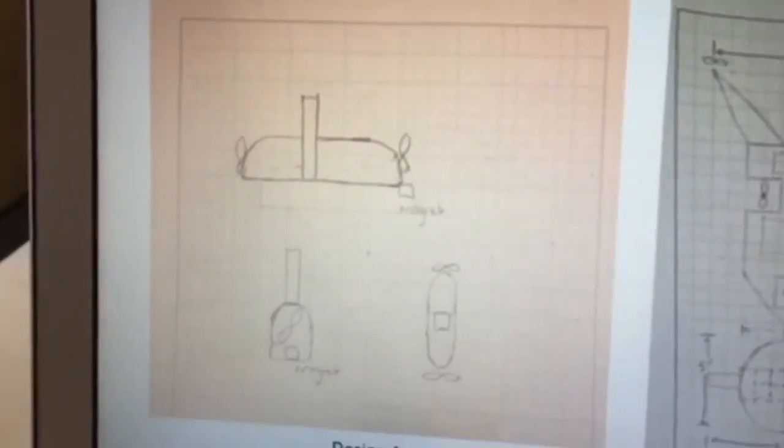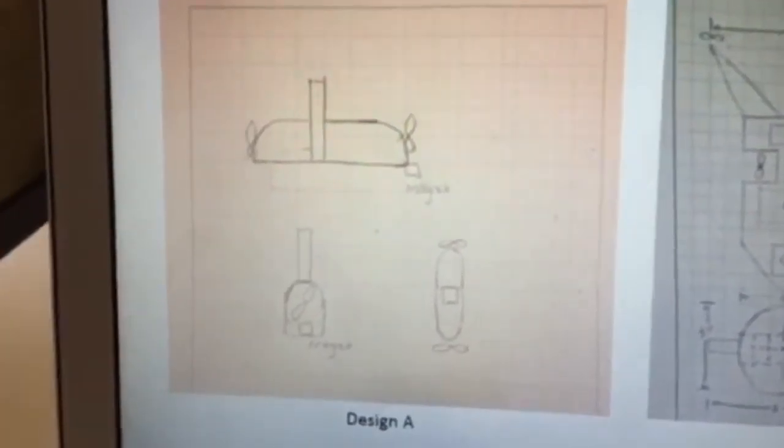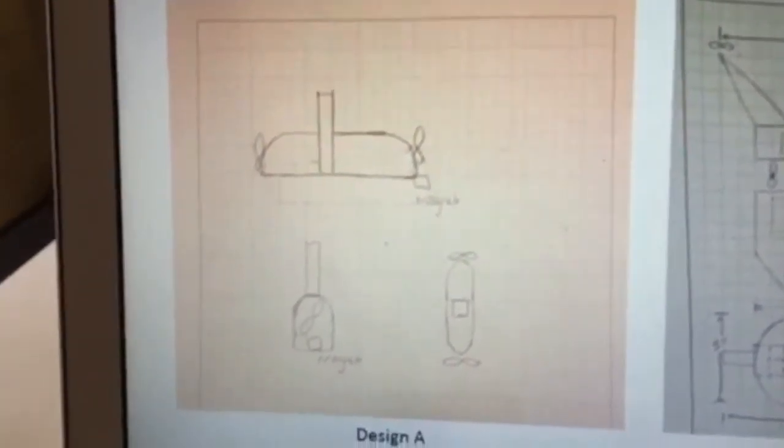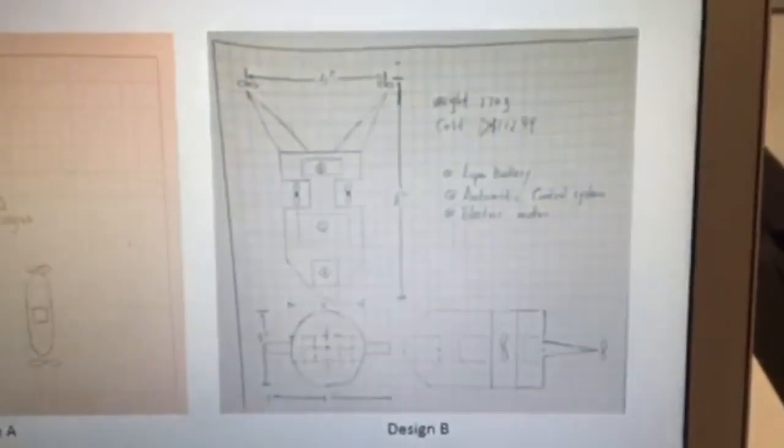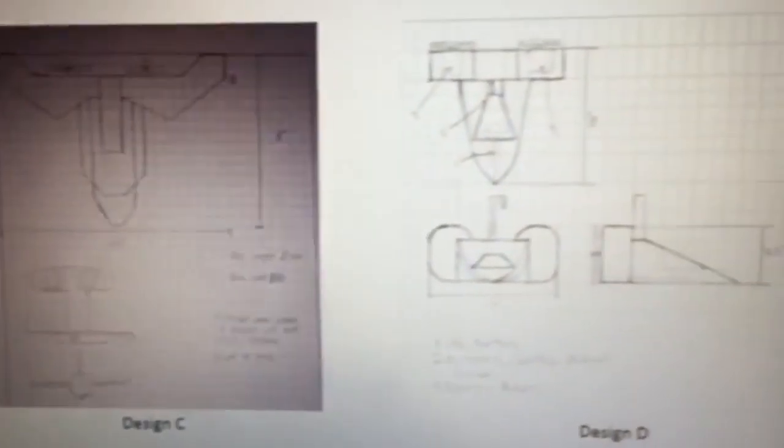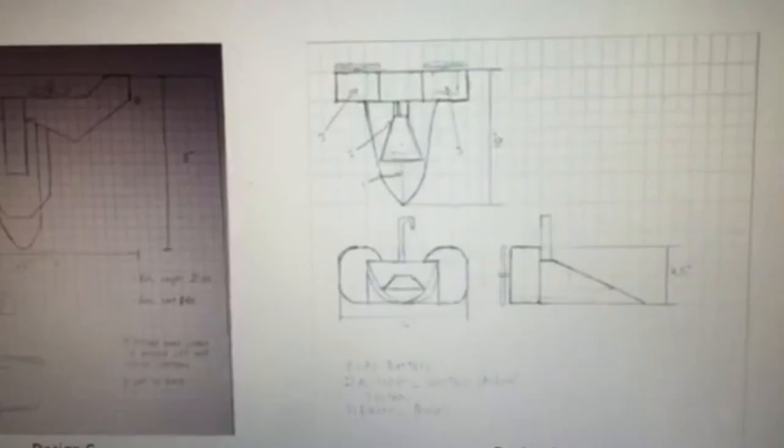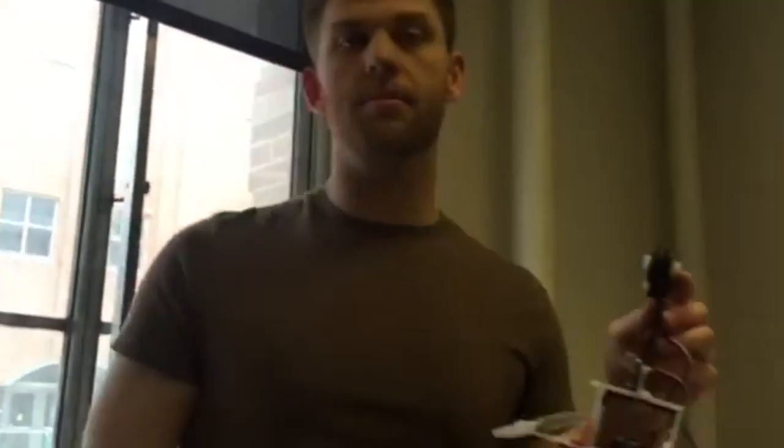The team started by coming up with four individual designs of their own. Some of the designs that came up by the members were design A, the bullet train design; design B, a quad propeller design; design C, a rotating wing design; and design D, a racer design. Upon using an evaluation matrix to compare these designs, the team came together and incorporated the ideas that we liked best from all the designs to come up with our final design, the cross-shaped design.